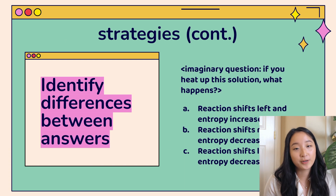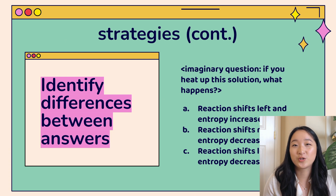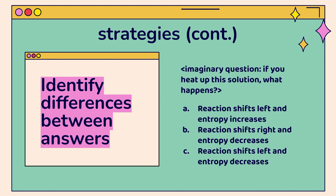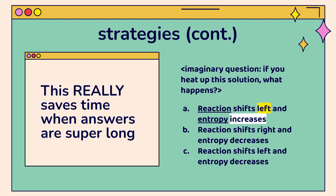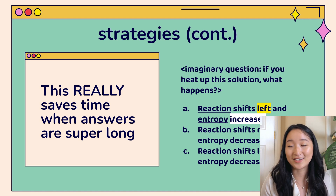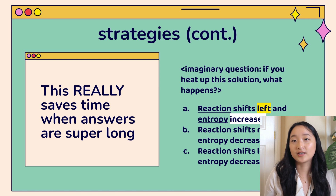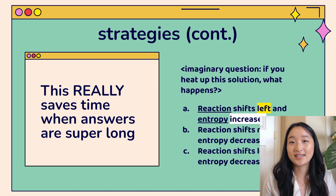Another test-taking strategy is to identify the differences between answer choices. This is really helpful when you have super long answers — just identify the key differences. For example, with a question like 'if you heat up a solution, what happens?', the answer choices might differ on which direction the reaction shifts and whether entropy increases or decreases. In actual exams the answer choices may be longer and harder to parse, but identifying those key differences and using test-taking strategies can save you a lot of time.